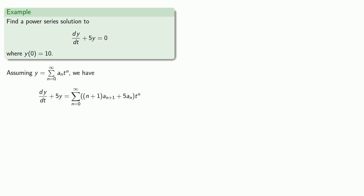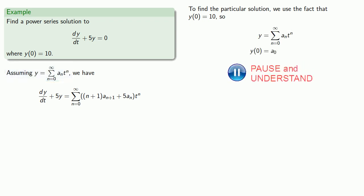To find the particular solution, we use the fact that we know y of 0 is equal to 10. So under our assumption that y is this series, then y of 0 is a0, equals means replaceable, so y0 equals 10, and so that tells me a0 equals 10.